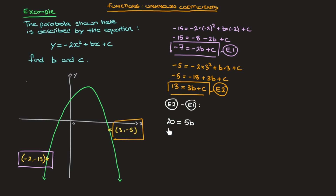Now looking at this equation, there's only one unknown, which is b, which we can find by dividing both sides by 5. So that would be 20 over 5 equals b. In other words, b equals 4. We now have one of the two unknowns.